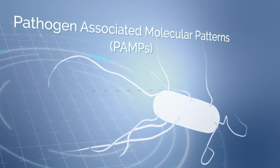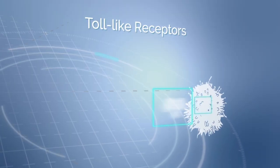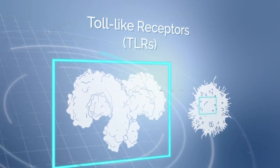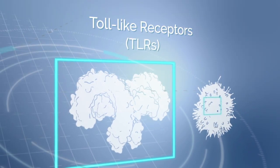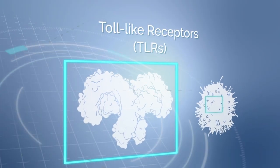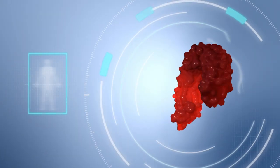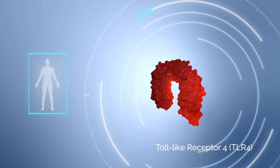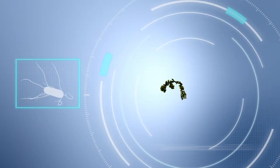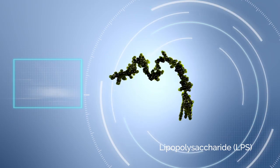Toll-like receptors, or TLRs, are a particularly important group of PRRs. Human beings have 10 identified members of the TLR family. Let's examine the role of one of these PRRs, TLR4, and its PAMP, lipopolysaccharide or LPS, in more detail.